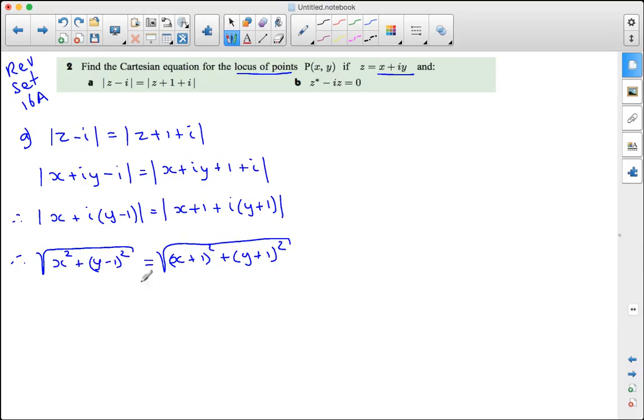Now if these need to be equal, then under the root it needs to be equal. So expand it: x squared + y squared - 2y + 1 equals x squared + 2x + 1 + y squared + 2y + 1.